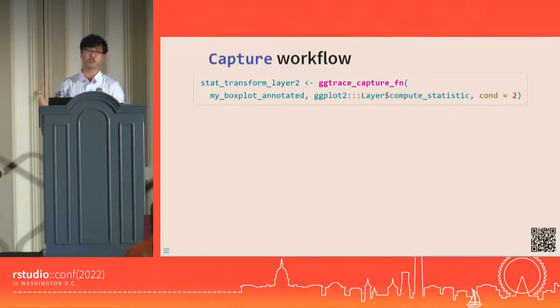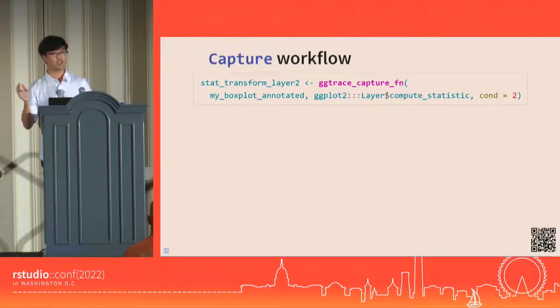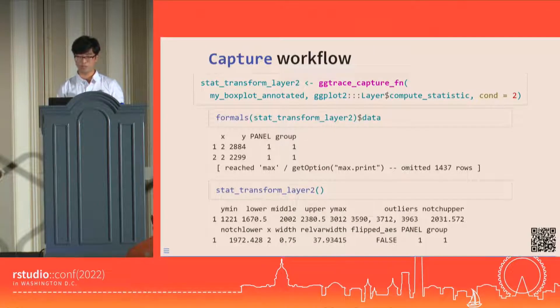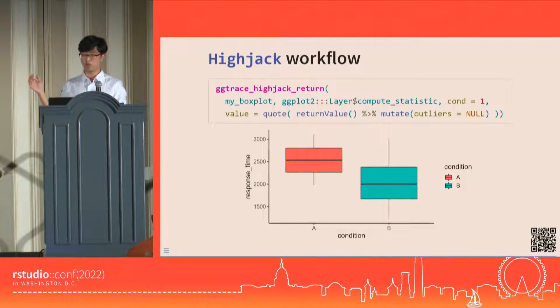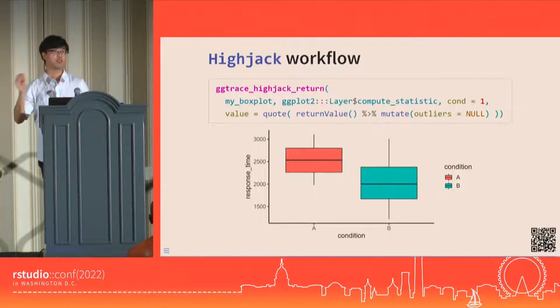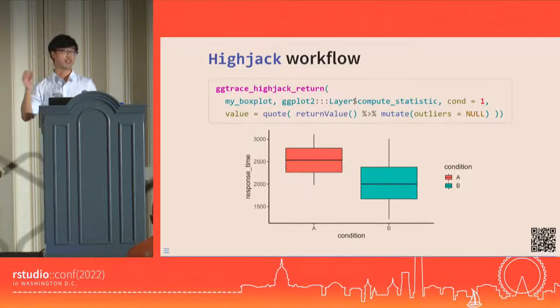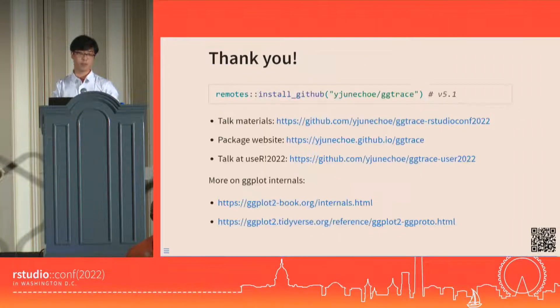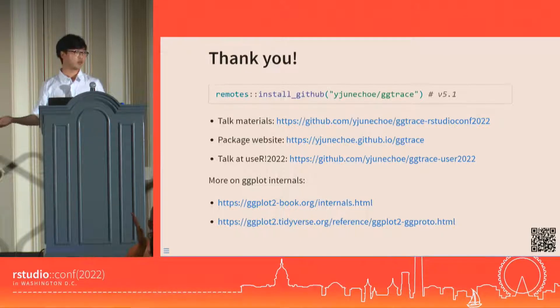But if you are interested in that, ggtrace has other workflow functions that you can use. There's functions from the capture workflow, like ggtrace_capture_fn, which essentially records the behavior of a ggproto method when it executes, and you can have it as a standalone function. You have functions from the hijack workflow, which lets you make ggproto methods return arbitrary values, so you can try to hack the internals and see what you can come up with. ggtrace is on GitHub. Here's some links to other materials, and I'd love to hear your feedback.